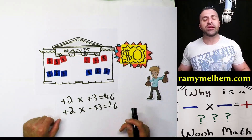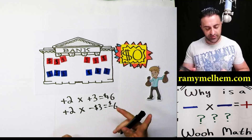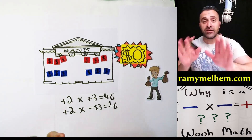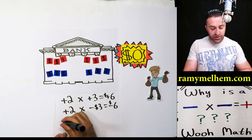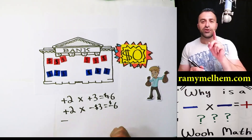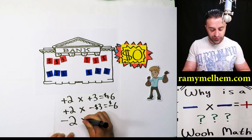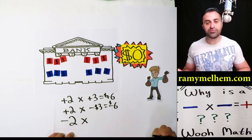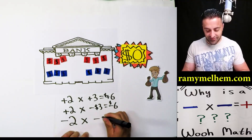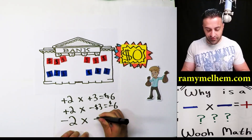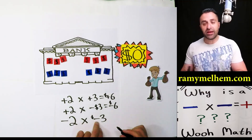'I'm going to subtract your debt — remove your debt so you have no more debt.' In equation words, he is going to subtract two groups of negative $3. He's going to subtract two groups of negative $3.